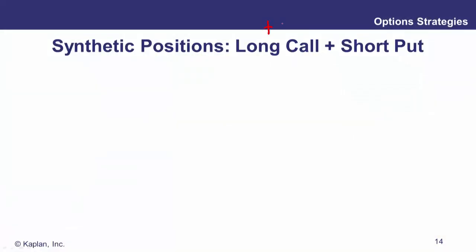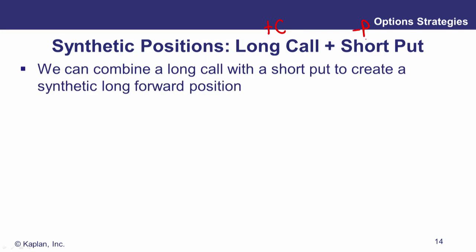In this module we're going to look at synthesizing a long forward position using options. The way we do this — a synthetic long position in the underlying — we take a long call position, often referred to as plus C. So we go long a call and we sell a put, often referred to as minus P. So long call, short put — that will synthesize a long position.